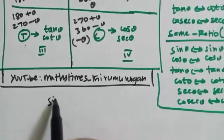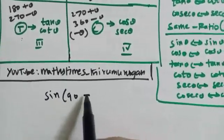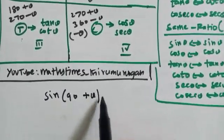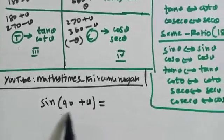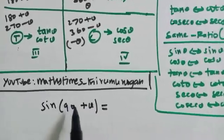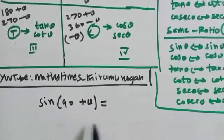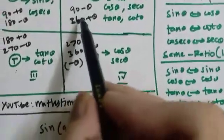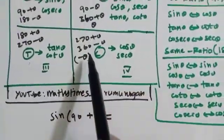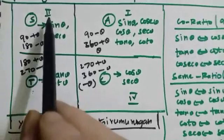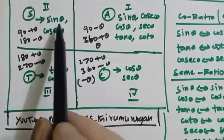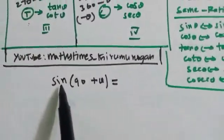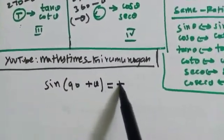For example, what is sin(90 plus theta)? First, 90 plus theta — what quadrant? 90 plus theta is in the second quadrant. What is positive? The sign is positive.